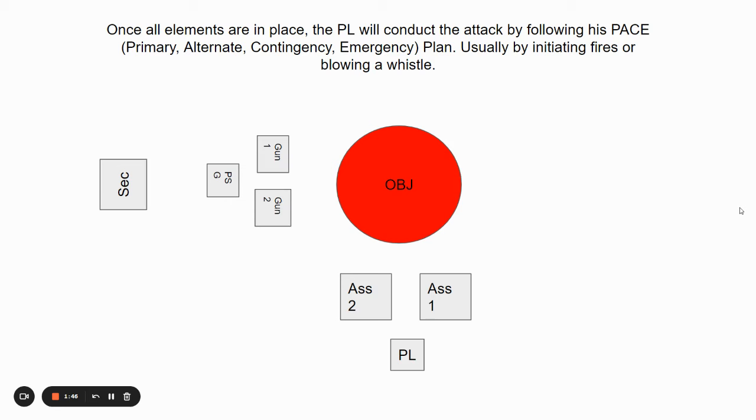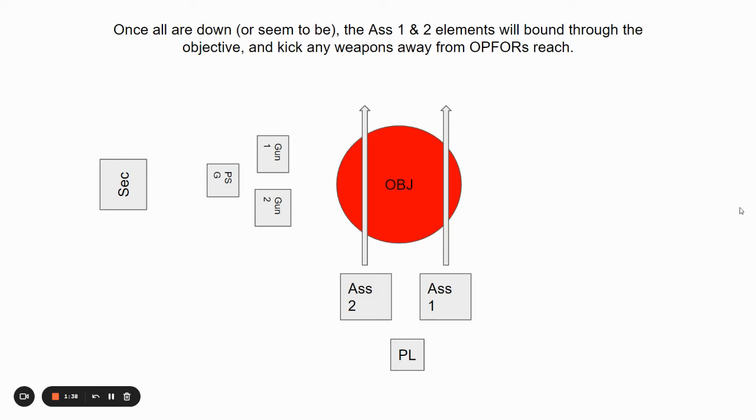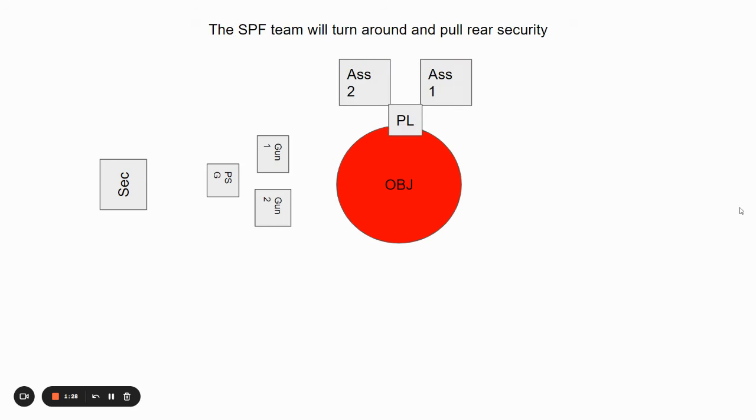Once all elements are in place, the platoon leader will conduct an attack by following a pace plan, usually by initiating fires or blowing a whistle. Once all of the enemy are down after the mad minute, the assaulting elements will bound through the objective and kick any weapons away from the OP-4's reach. They'll bound through.